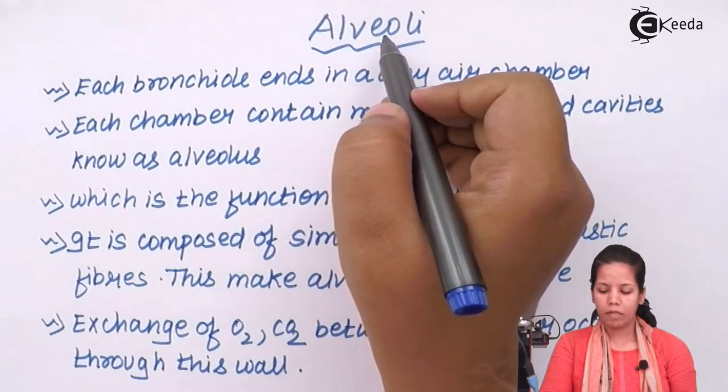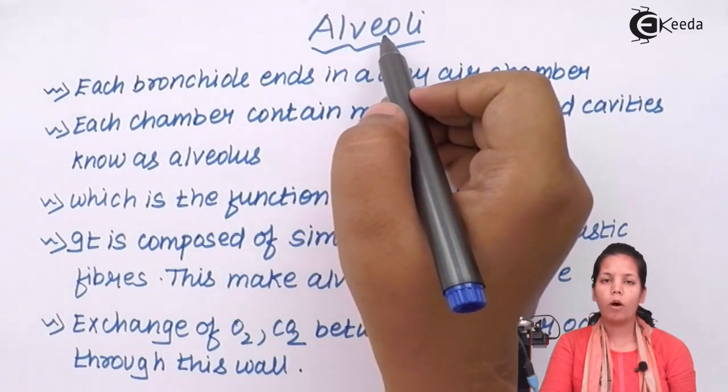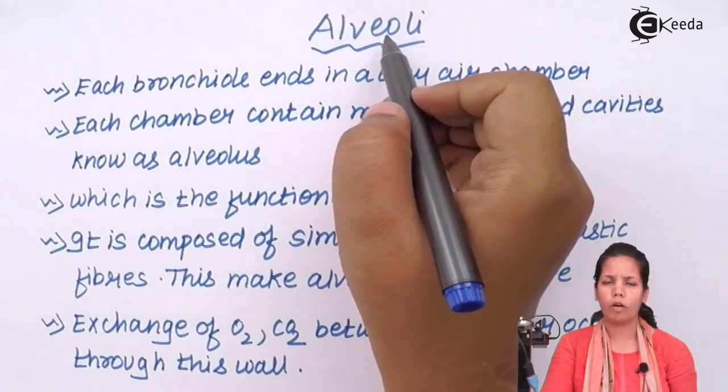Alveoli. Now if I talk about alveoli, these are cup or bag-shaped structures present at the end of your bronchioles or bronchi.